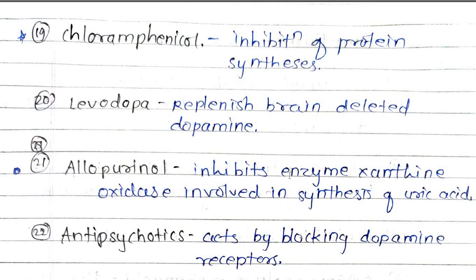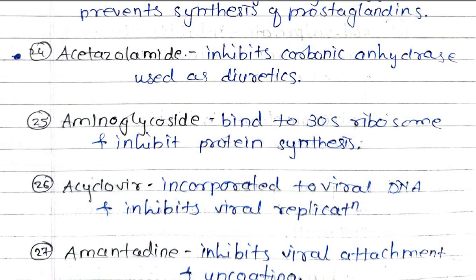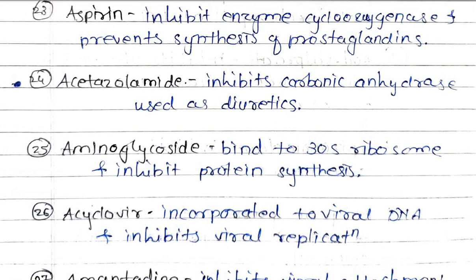Allopurinol inhibits the enzyme xanthine oxidase, which is involved in the synthesis of uric acid. Antipsychotics act by blocking dopamine receptors. Aspirin inhibits the enzyme cyclooxygenase and prevents synthesis of prostaglandins.